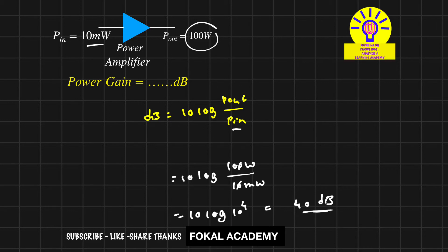The power gain in dB is 40 dB for the given power amplifier. This is the process for calculating power gain in dB, and this is the important formula.